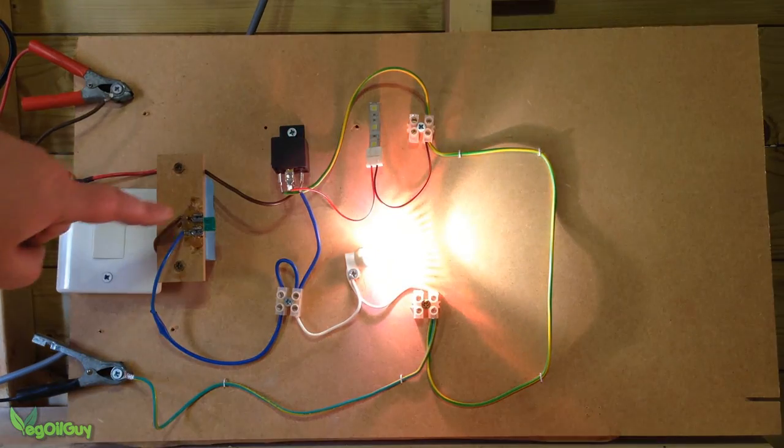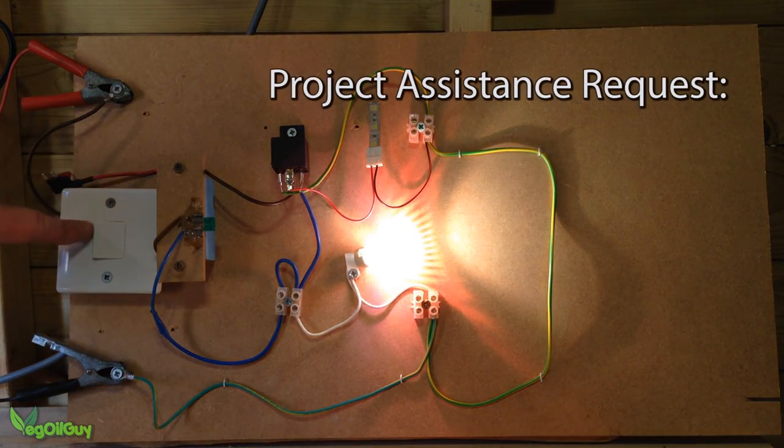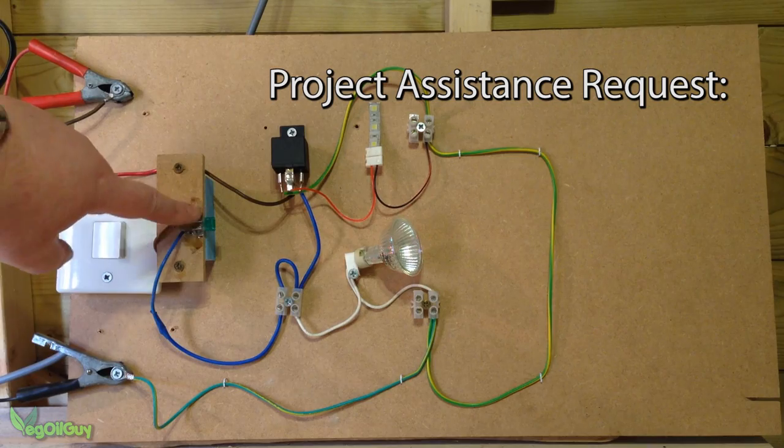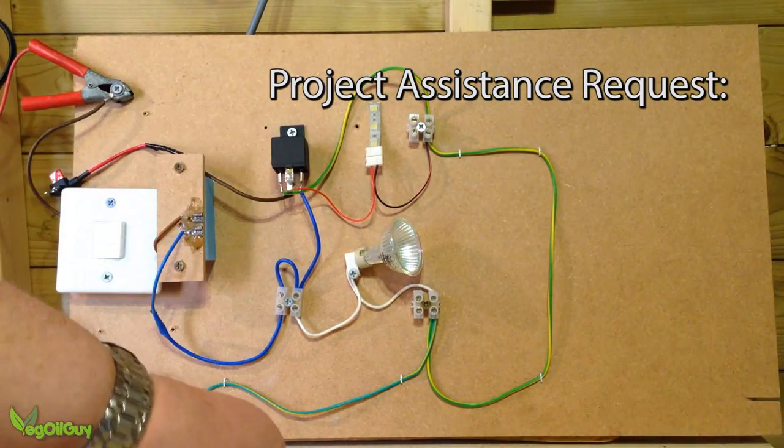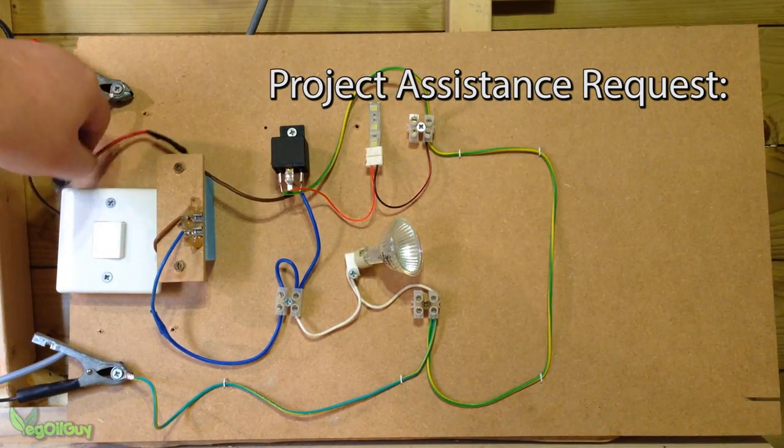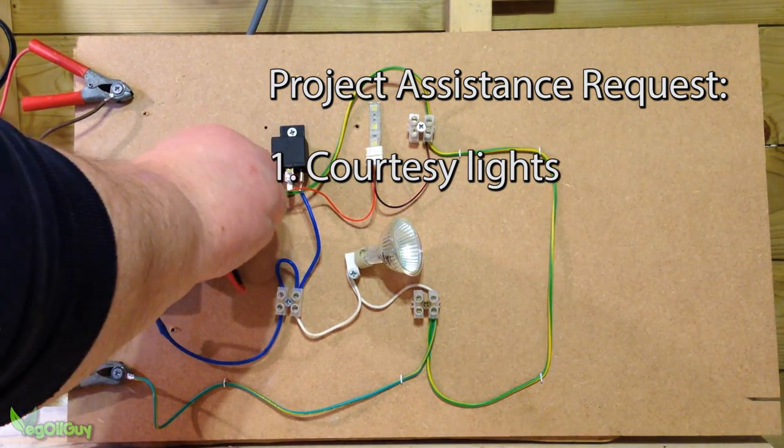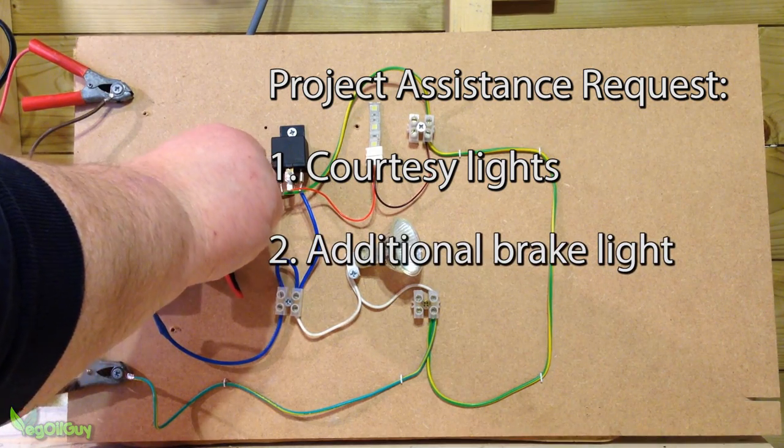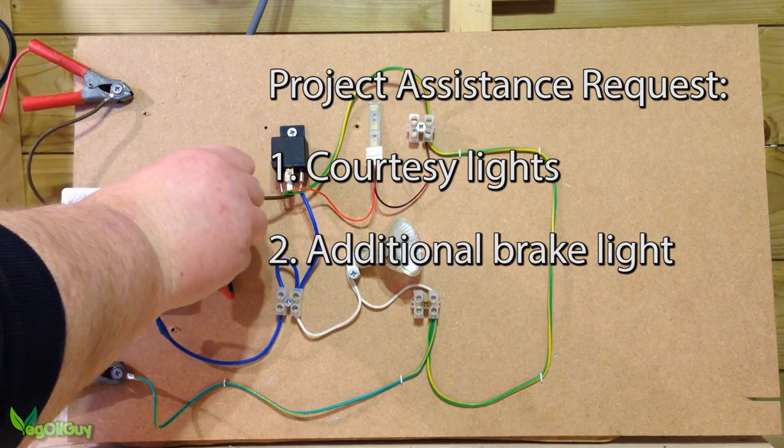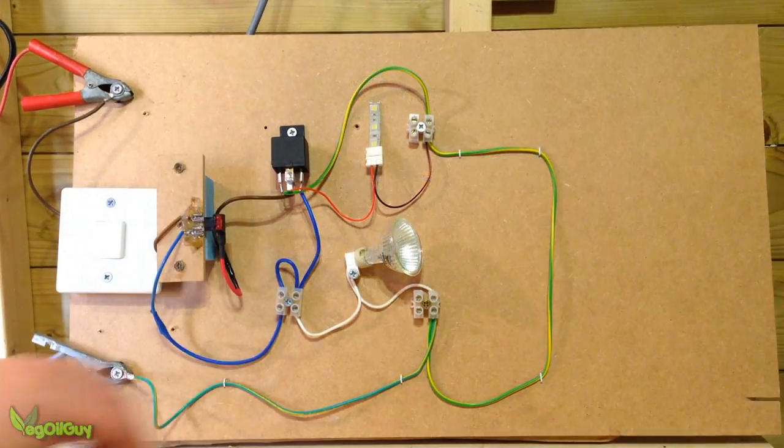A couple of guys contacted me separately for advice. Both had a good idea of what they wanted to do, but were looking for a second opinion. One subscriber wanted to fit courtesy lights under each of his car doors. Another wanted to fit a third braking light. The answer to both of them is simple: use a relay.